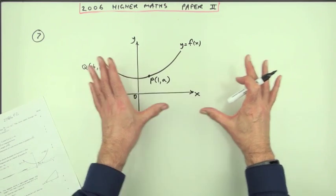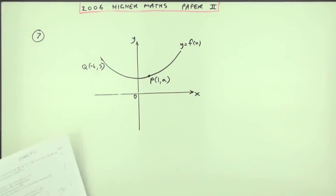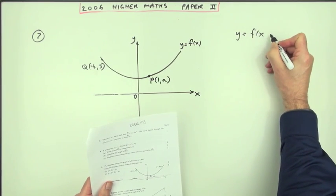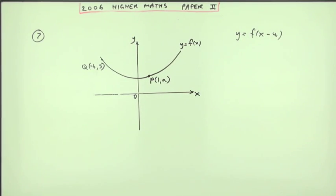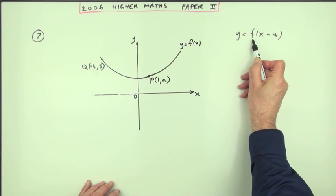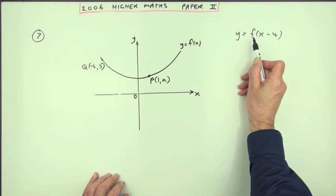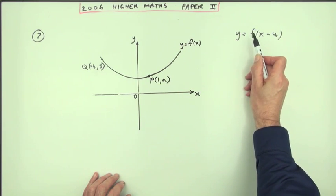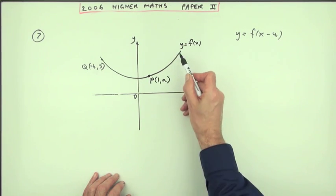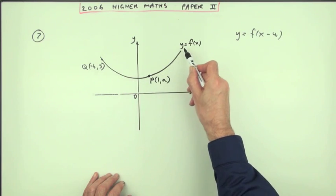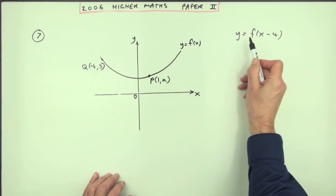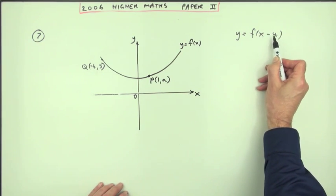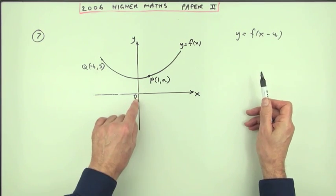The first one is this: you have to show y equals f of x minus 4. Remember, f stands for the result of the calculation. Here you carry out some calculation and the answer is plotted as a y-coordinate. So this graph shows all the original answers. F stands for the original answer.